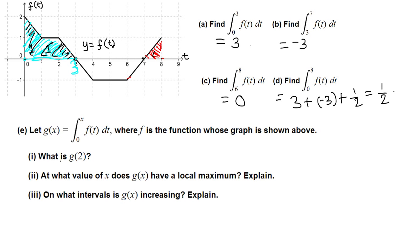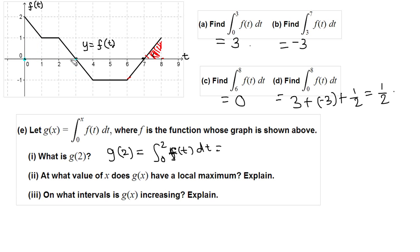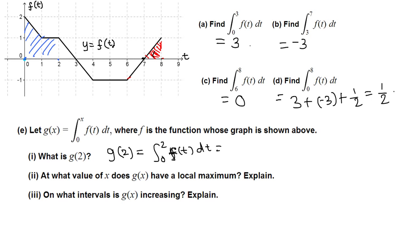Next, g(x) is given as the integral of f from 0 to x. To find g(2), replace x by 2, giving the integral from 0 to 2 of f(t) dt. This is the area under the curve from 0 to 2: one unit square is 1, another is 1, and a half makes 2.5. So g(2) equals 2.5.